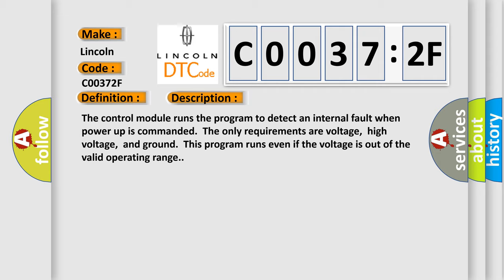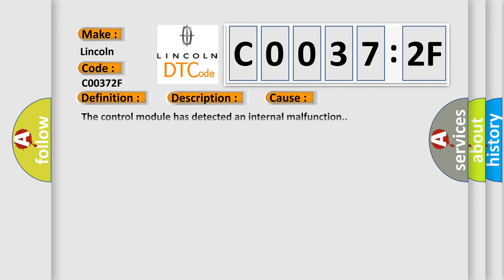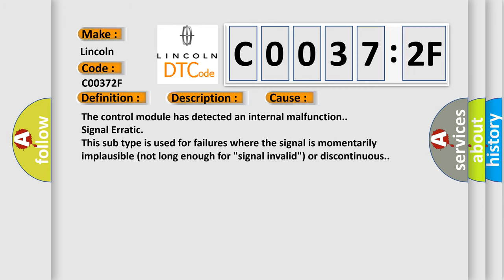This diagnostic error occurs most often in these cases: The control module has detected an internal malfunction signal erratic. This subtype is used for failures where the signal is momentarily implausible, not long enough for signal invalid or discontinuous.